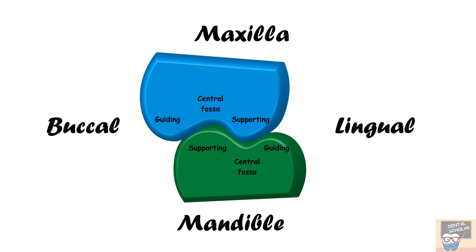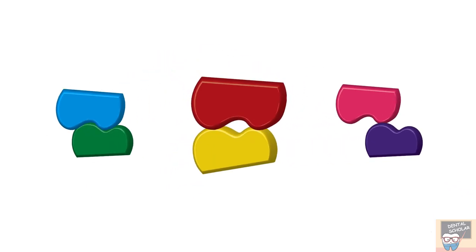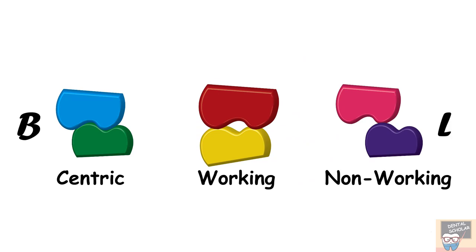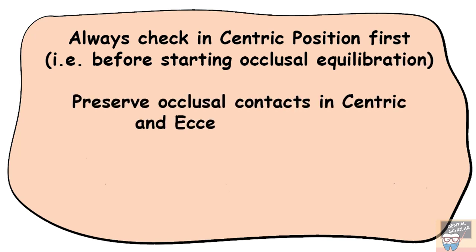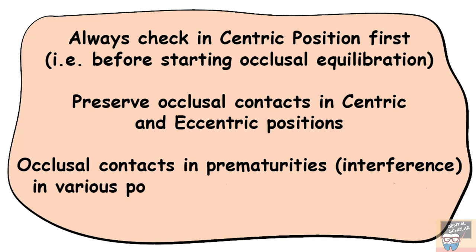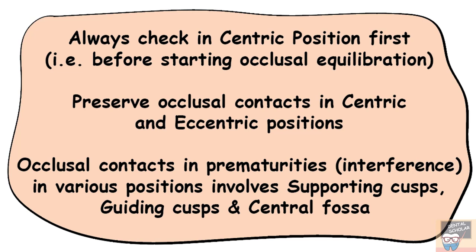Now let's start with the equilibration. Occlusal prematurities can be seen in any of the three positions: in centric, in working side contact, or in non-working side contact. A few points to remember: first, always check in the centric position before starting occlusal equilibration. Second, try to preserve the occlusal contacts in the centric and eccentric positions. Third, the occlusal contacts involved in prematurities are the supporting cusp, guiding cusp, and central fossa — any one or more of these may be reduced.